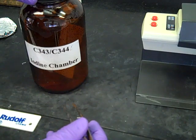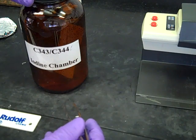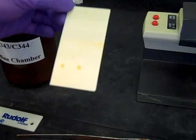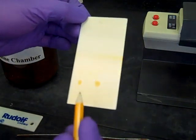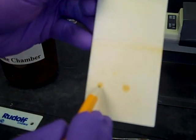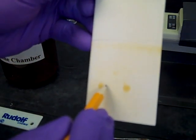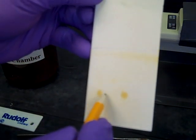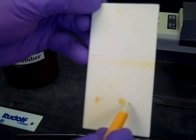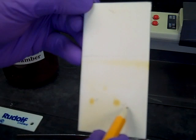As we take this out of the iodine chamber, we'll see a couple yellow spots that we want to notate. Make sure you mark that those spots have iodine stain.